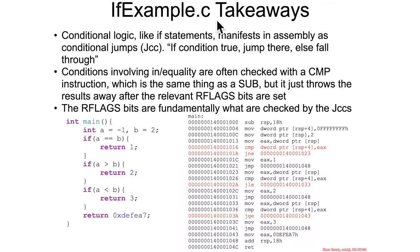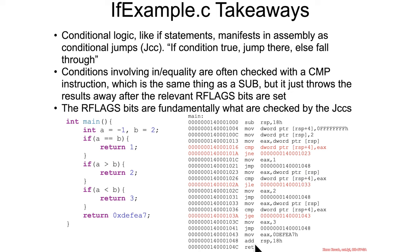The takeaway from ifExample.c is that conditional logic like if-statements turns into JCC — jump condition code — type jumps, where if the condition is true it jumps to the specified address; if not, it falls through to the next assembly instruction. But here you can see it will eventually run into an unconditional jump, which bounces it down towards the end of the function.